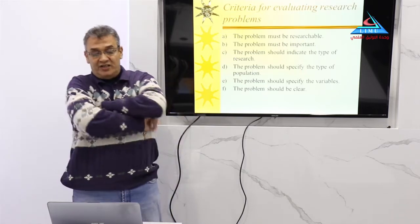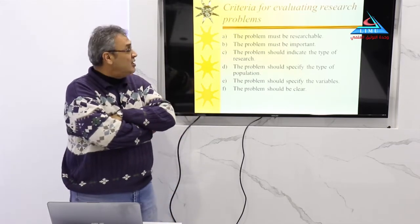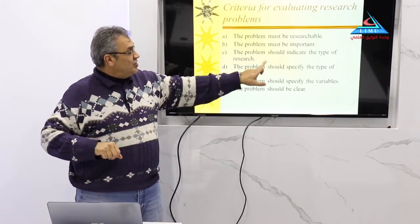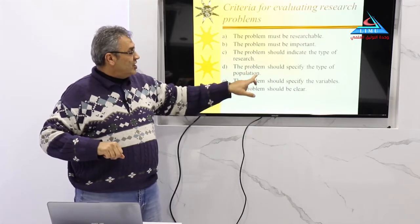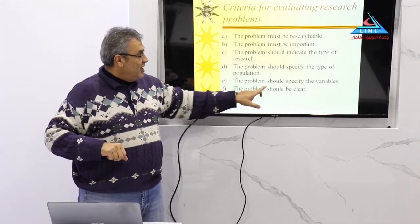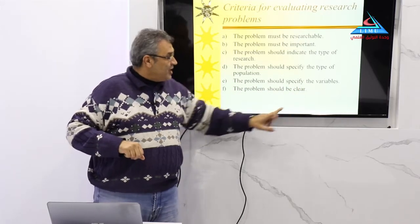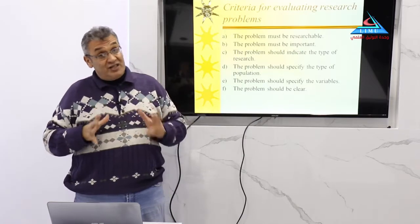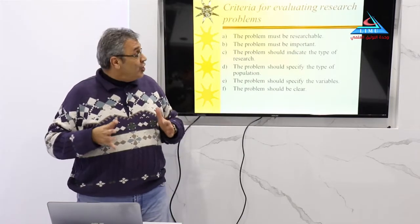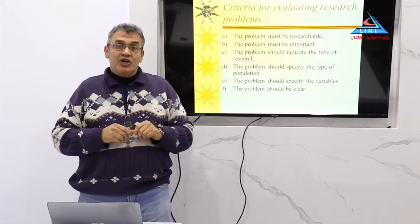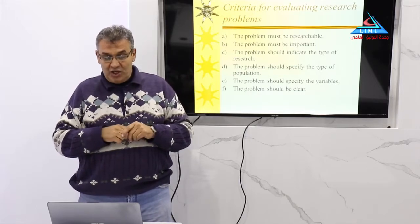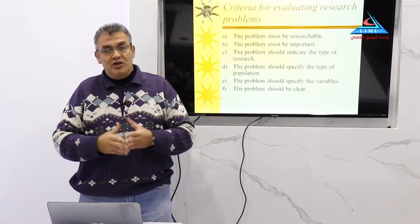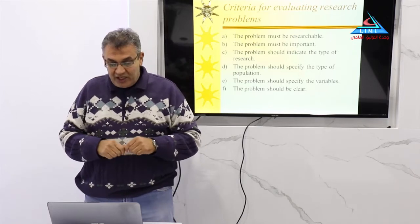What are the criteria to evaluate the research problem? The research problem should be researchable and important. It should indicate the type of research and specify the type of population. It should specify the variables we are evaluating and the problem should be clear. The research problem should also be measurable and feasible — you shouldn't bring something that we couldn't measure, couldn't work on, or couldn't evaluate.